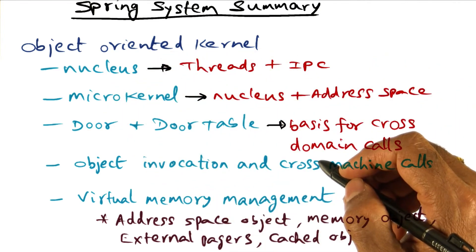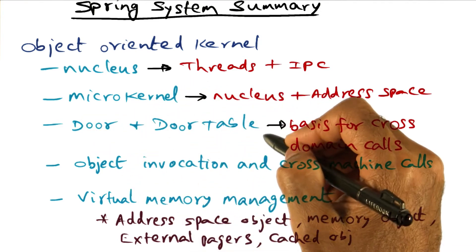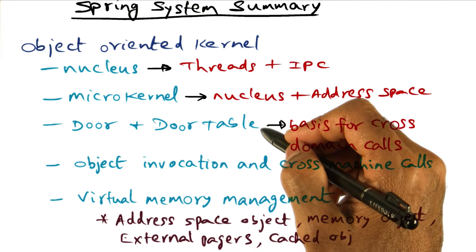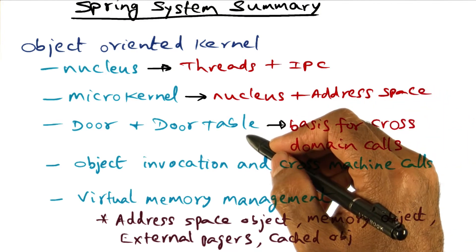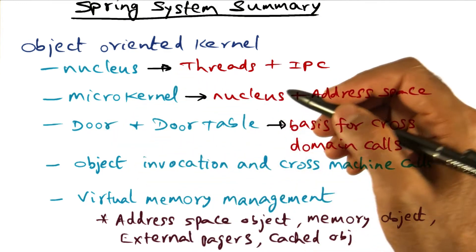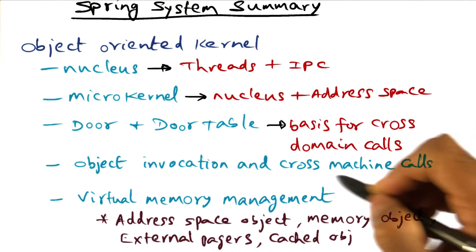And the way you access those objects is through doors. And in every domain, there is a door table. There is a set of capabilities that a particular domain has for accessing doors on different domains. And this door and door table is the basis for cross-domain calls.